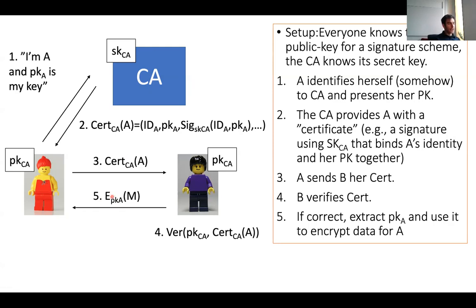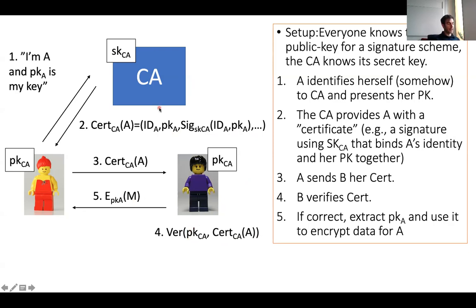Another thing to notice: the certificate authority doesn't need to be online when the communication happens. Alice can go to the CA yesterday, collect the certificate, and today — even if the CA is offline — Bob can still verify the certificate entirely offline: just get the certificate string containing the signature, verify it's valid under the CA's public key, and if so, you know Alice was properly identified and you can use her public key. Both drawbacks of KDCs are thus addressed by CAs.